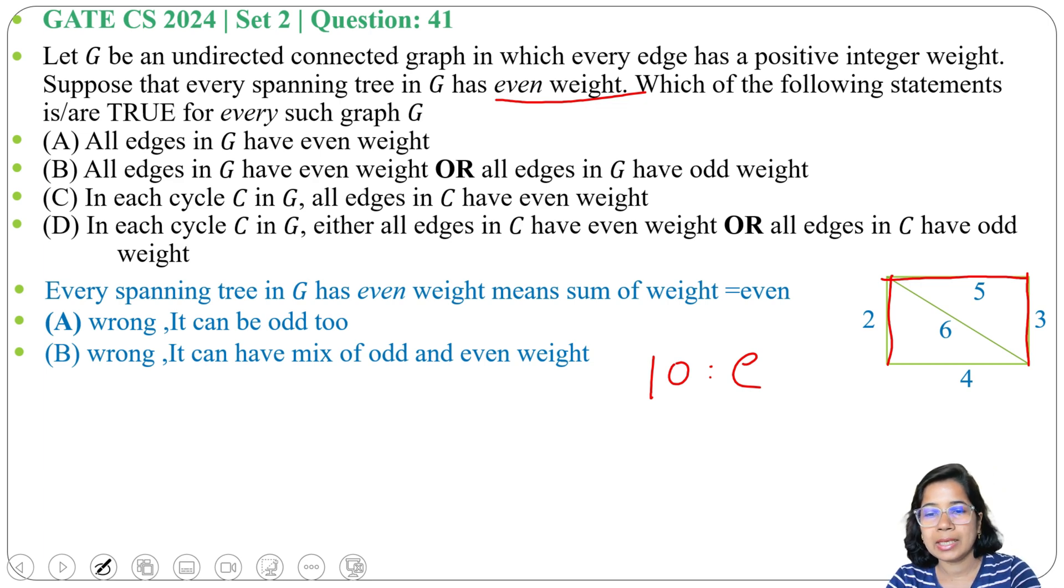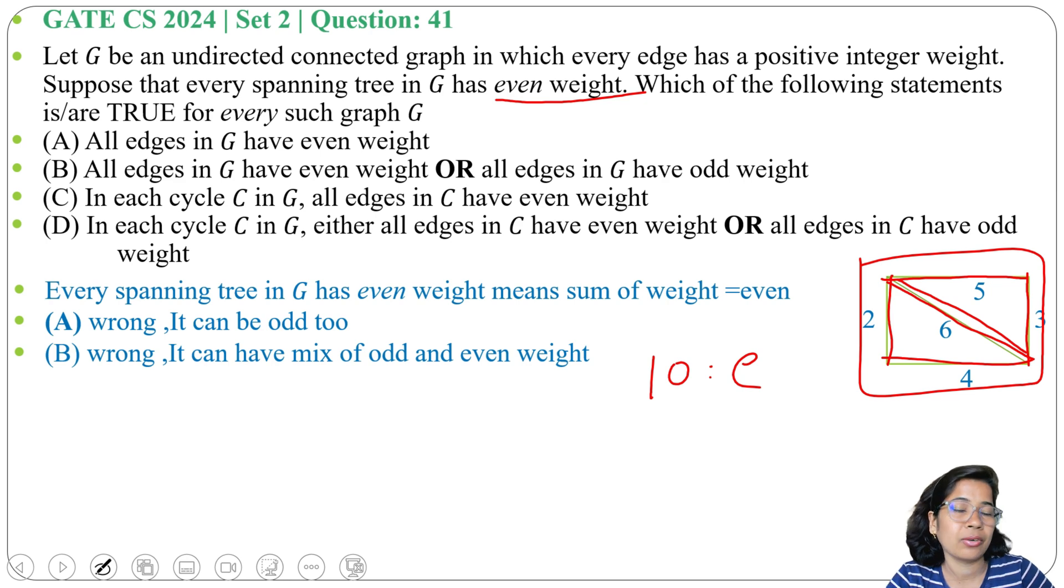Next option C: in each cycle in G, all edges in C have even weight. There are two cycles. This is one cycle: 2, 4, 6 - all are even. This is another cycle: 6, 5, 3 - not all are even. And the whole is another cycle - not all are even, so this is wrong.